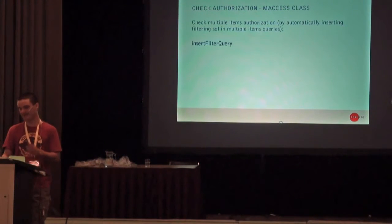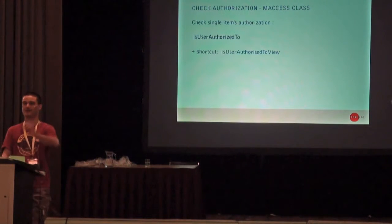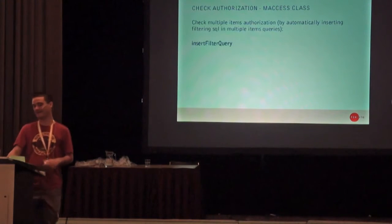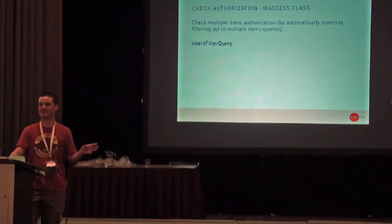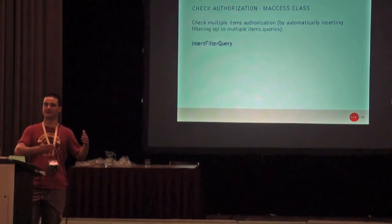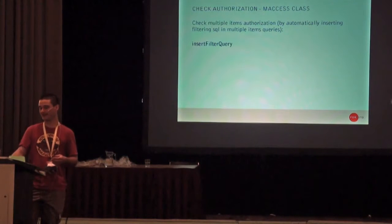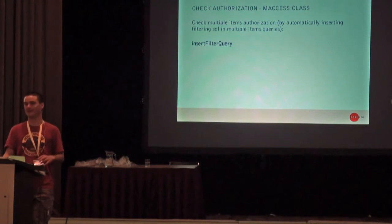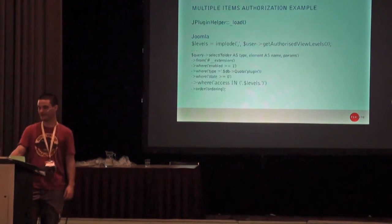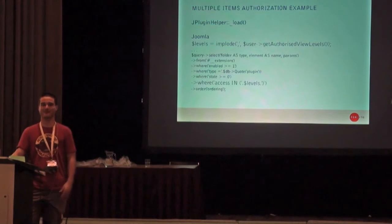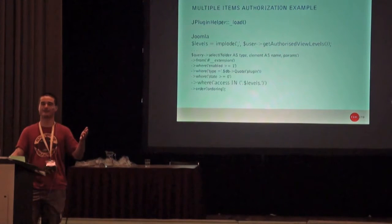The second function is for single item permissions — a single module, a single article, whatever is a single item. The third function, which was a bit more tricky, is for multiple items. When you have a query that will give you back a list of items and you want that query filtered already when the results come back, you just use the insert_filter_query function. It takes care of inserting appropriate joins into the query, and the results come back already filtered. That's an example from the JPluginHelper that loads plugins — so you only get the plugins you're allowed to interact with.